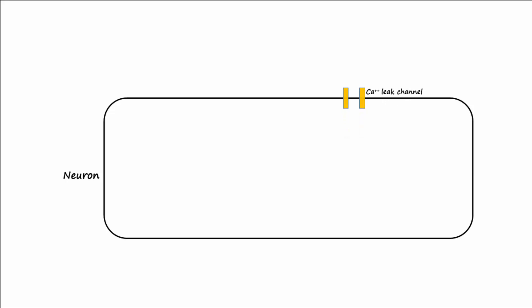What if leak channels for calcium ions were added to the membrane, or the cell membrane became more permeable to calcium ions? First remember where calcium is highest so you can tell which direction it would diffuse. It's higher outside, so it would go down its concentration gradient and come into the cell.